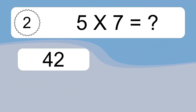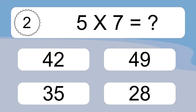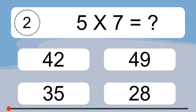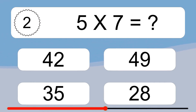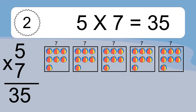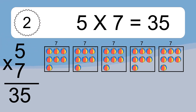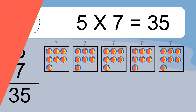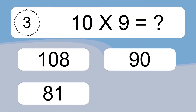5 times 7 equals what? 5 times 7 equals 35. We have 5 boxes, and each box has 7 colorful balls inside. If you count all the balls in all the boxes together, you will have 5 times 7 balls. This equals 35 balls.